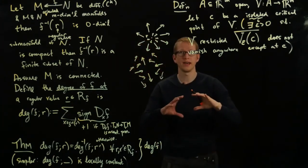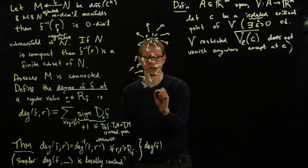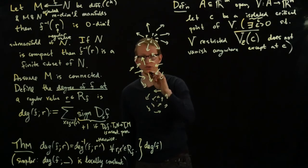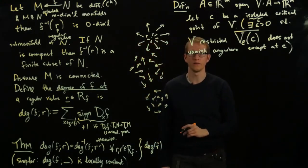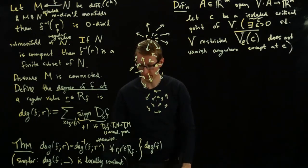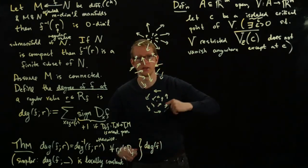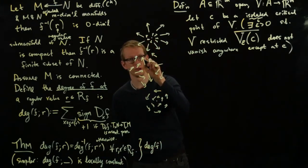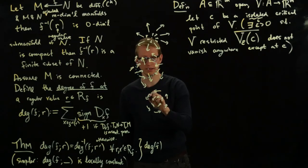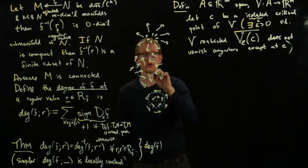Or you might have, again, something concentric. You might have something that looks like it's generated by rotations. And at the origin you have a vanishing point. All of these are examples where I can find an open neighborhood around the critical point at which the vector field doesn't vanish at any point inside of this closed unit ball.